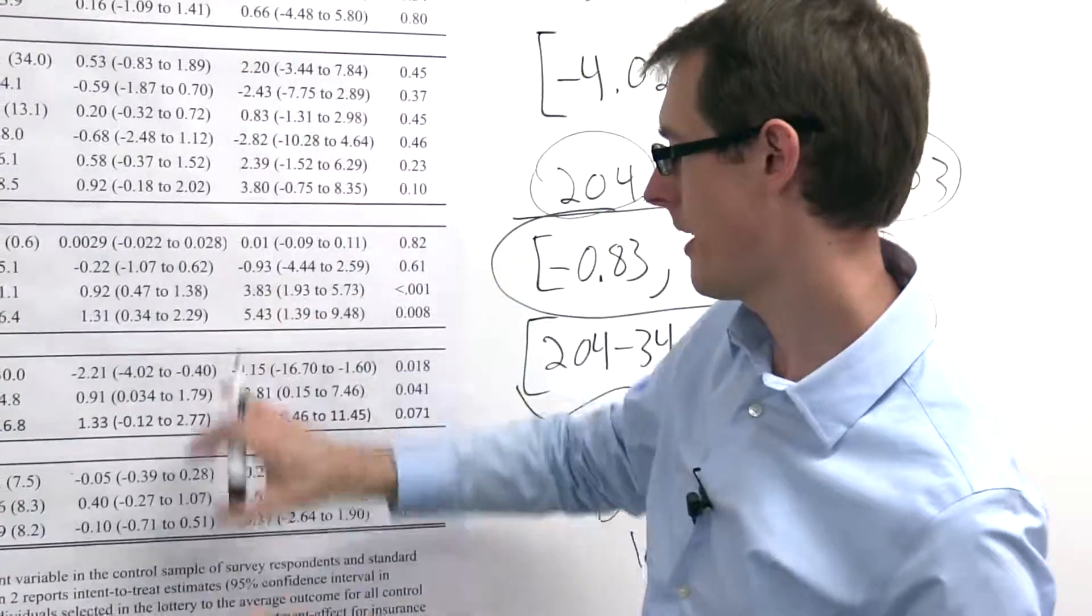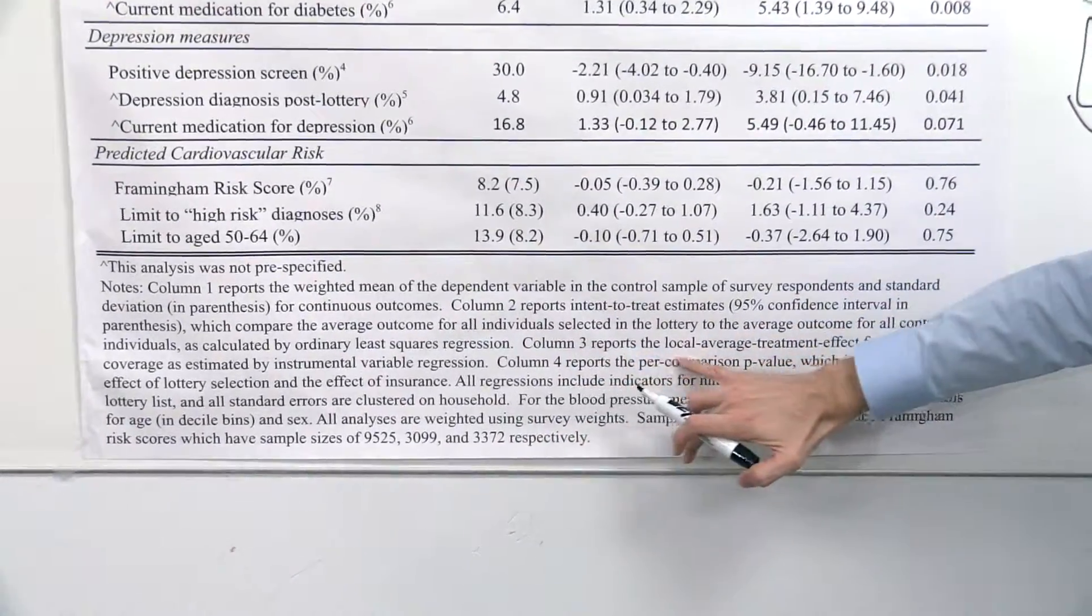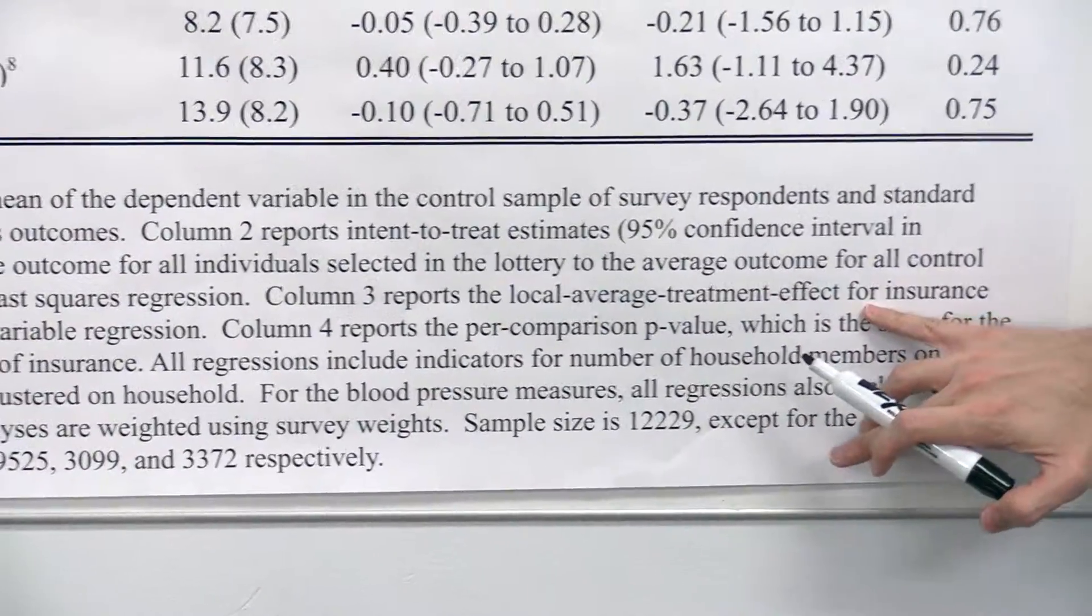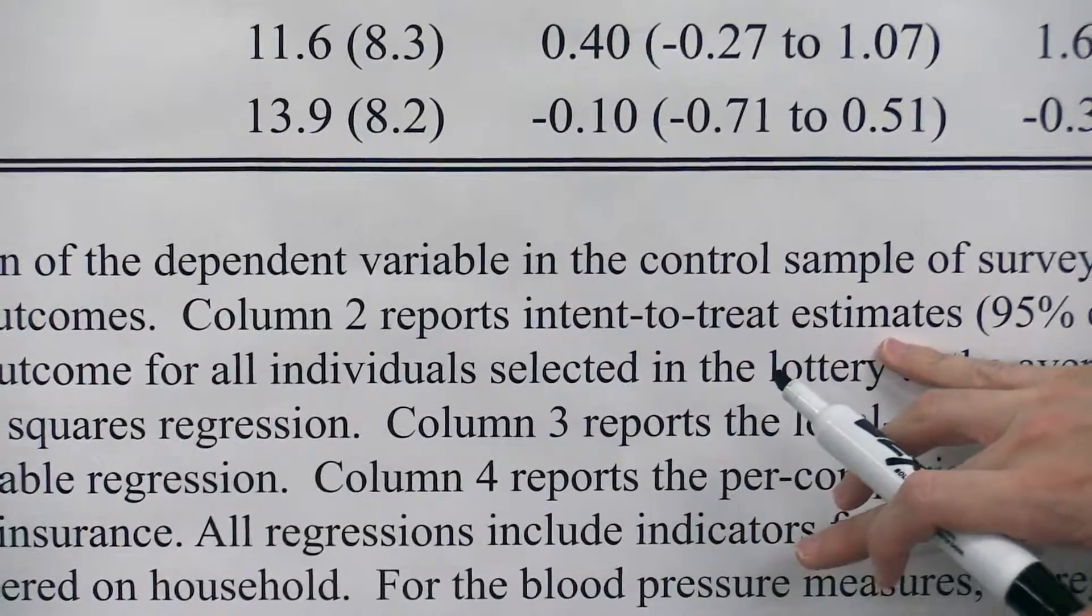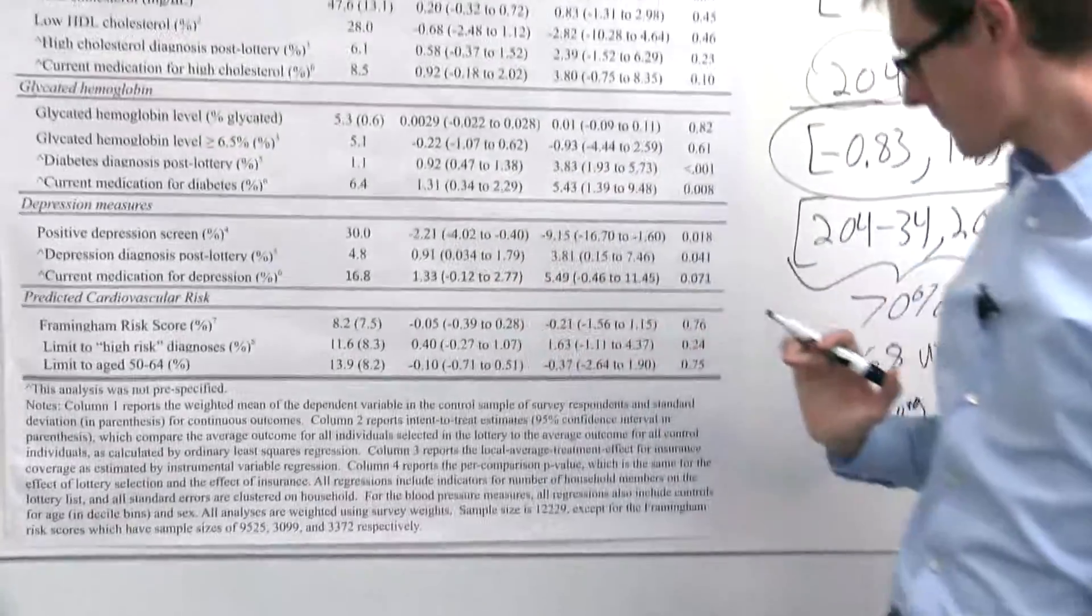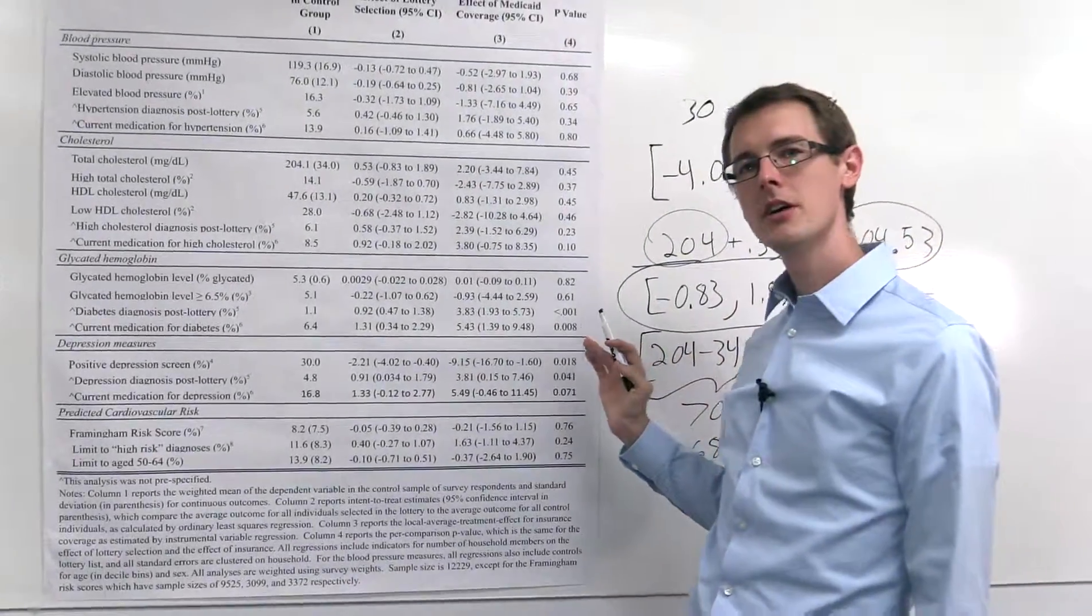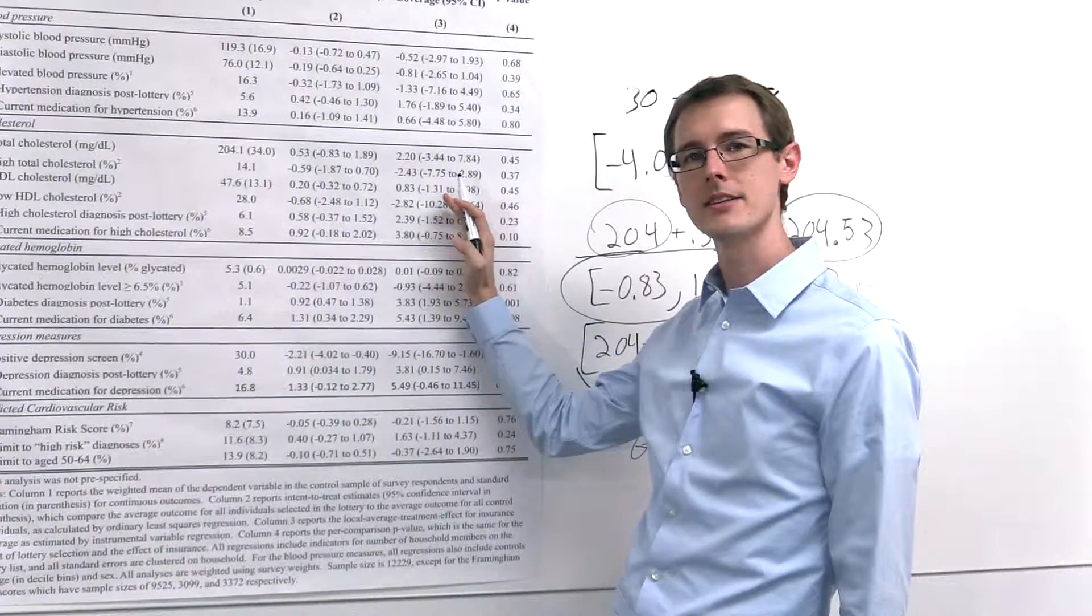And you can see right here down in the footnotes here, that's the way they say. Column 3 reports the local average treatment effect. Remember I mentioned that earlier on. And column 2 reports intent to treat estimates. And they're 95% confidence intervals. So these are the main results from that Oregon study. We'll get back to this column later on when we talk about instrumental variables analysis.